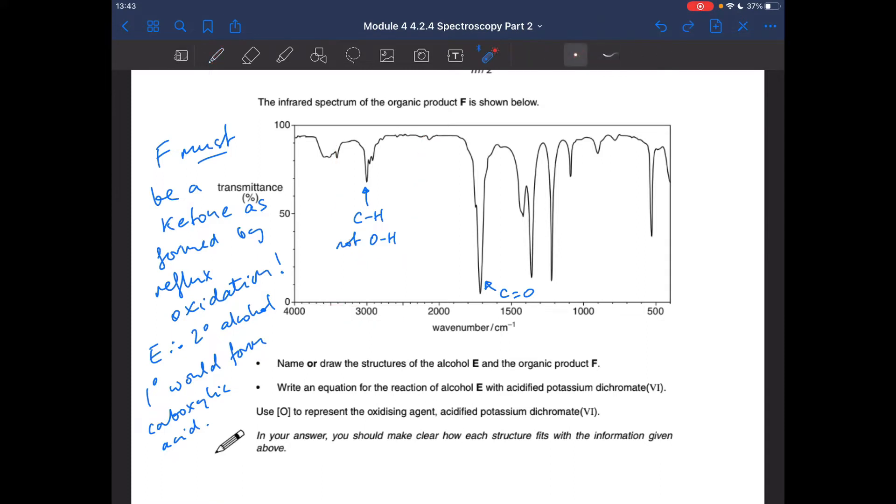So you can see what I've written here. These are literally just notes that I would encourage students to make as they process the information. Haven't even got into the answer yet. So I'm saying F must be a ketone, because it's been formed by reflux oxidation. So that means E must have been a secondary alcohol. If E had been a primary alcohol, we would have got a carboxylic acid when you oxidize it under reflux.